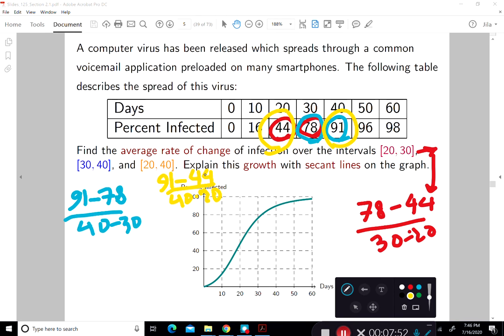Now, as we're discussing this, so let's see, the first one is when we discussed the average rate of change over 20 and 30. This is 20 and this is 30, 20, 30. And over here, this part was 78. And this part was 44.